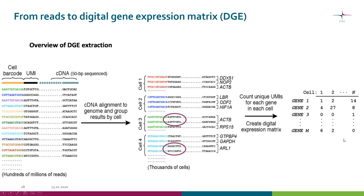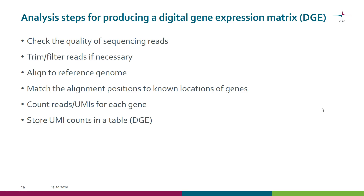We count the UMIs and end up with what is called a digital gene expression matrix, where cells are columns and genes are rows, and the numbers indicate how many UMIs for each gene in each cell were detected. Often you get this matrix ready-made, but it's good to understand what happens behind the scenes: reads from the sequencer come as a FASTQ file, quality is checked and reads trimmed or filtered if needed, then aligned to the reference genome, matched to gene locations, counted, and stored in the matrix.